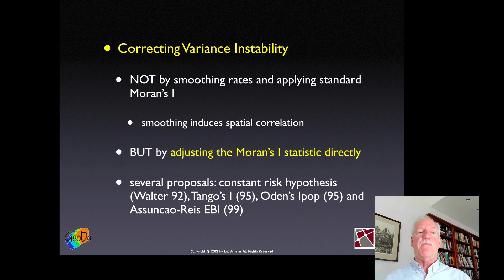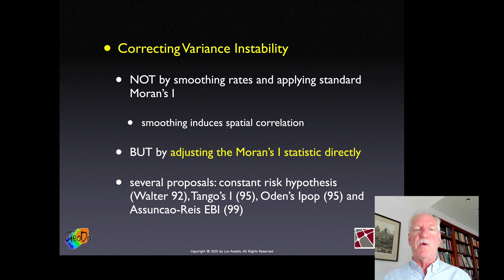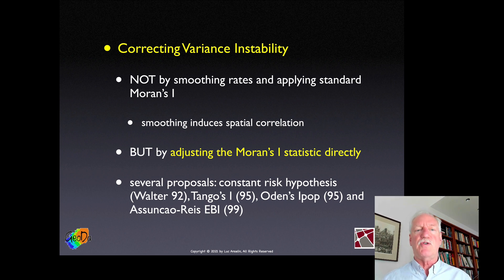To fix the variance instability problem, what we should not do is apply a smoothing algorithm like empirical Bayes smoothing and then apply the standard Moran's I to those smoothed rates, because spatial smoothing builds in spatial autocorrelation by construction. Instead, there have been a number of proposals to fix the statistic directly by carrying out a transformation to the values to which Moran's I is applied. These suggestions pertain to the global Moran's I, and we extend this notion to the calculation of the local Moran.